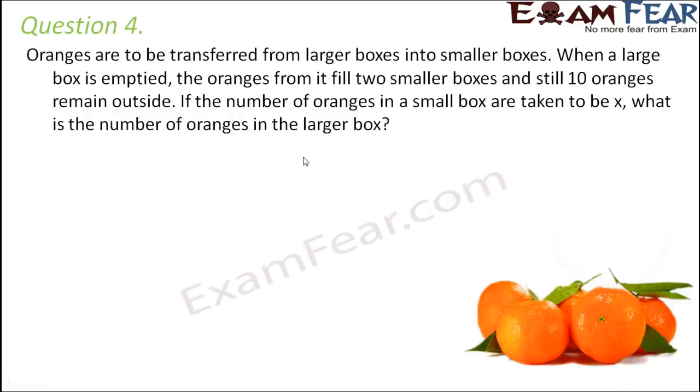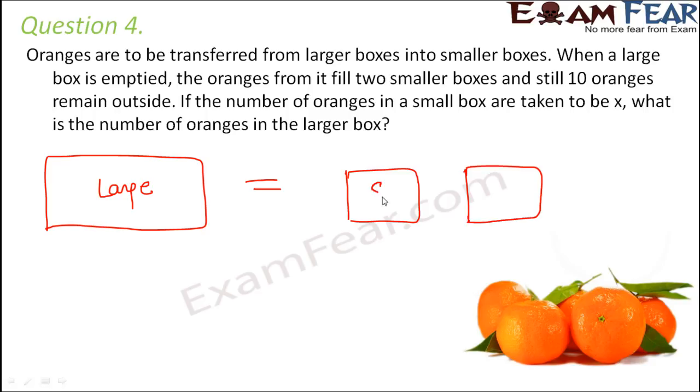Question number 4. Oranges are to be transferred from larger boxes into smaller boxes. When a large box is emptied, the oranges from it fill 2 smaller boxes and still 10 oranges remain outside. So basically there were oranges in a large box. Let's say that this is the large box and when this large box was emptied, the oranges filled 2 smaller boxes. So let's say these are the smaller boxes. So these 2 smaller boxes were filled plus on top of this there were some 10 oranges which were left. So basically 2 smaller boxes plus 10 oranges, all of these together is equal to the total number of oranges in the large box.